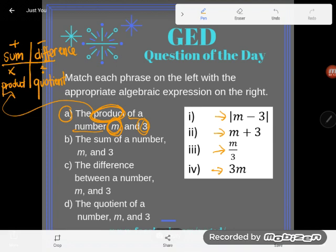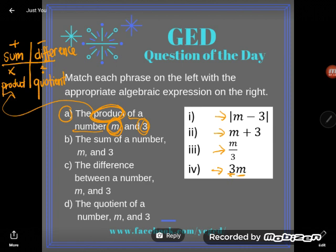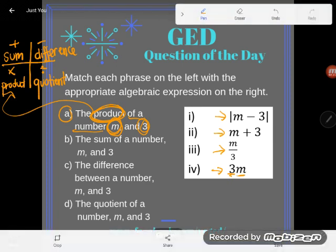In algebra, when we want to multiply together a number and a letter, we do it with proximity. Proximity. We just shove those two things really, really close together with nothing between them, and that's how we know they're multiplying. So I have 3 and m all shoved up next to each other with nothing between them.